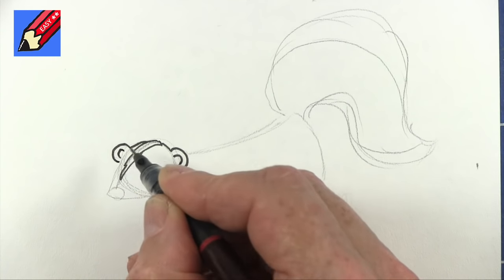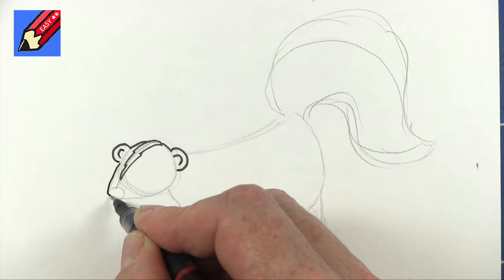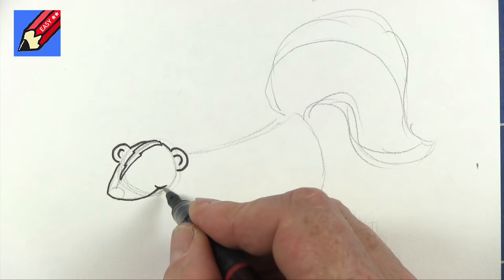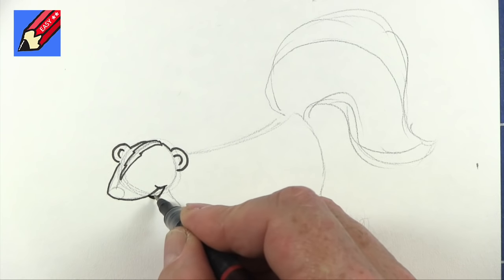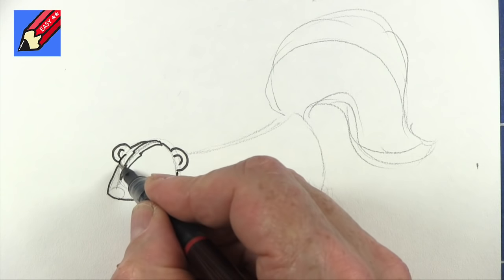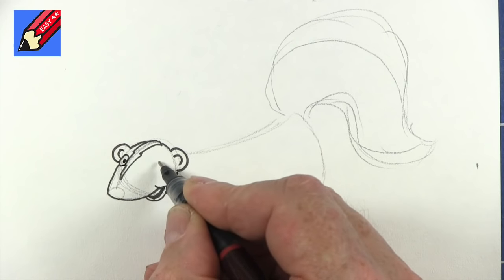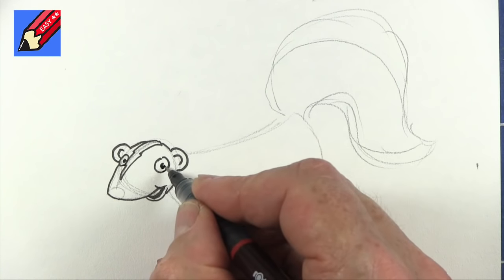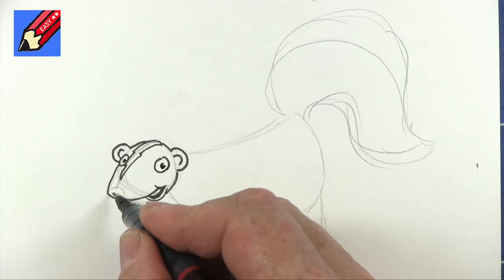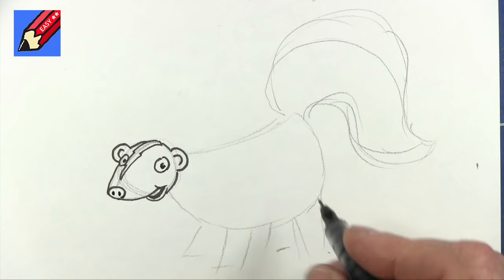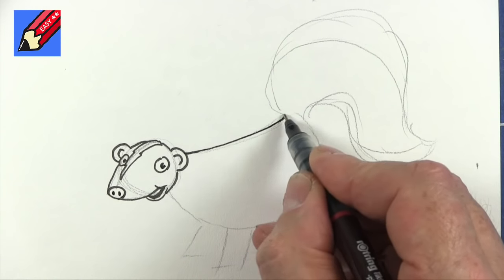This will come out there like that and then let's give him a little smile. Okay so we'll come back down like that and we're going to have one eye there and one eye there and I'm not making that complete, it's kind of like a Pac-Man shape to make it look like a shiny eyeball and quite a piggy kind of nose.